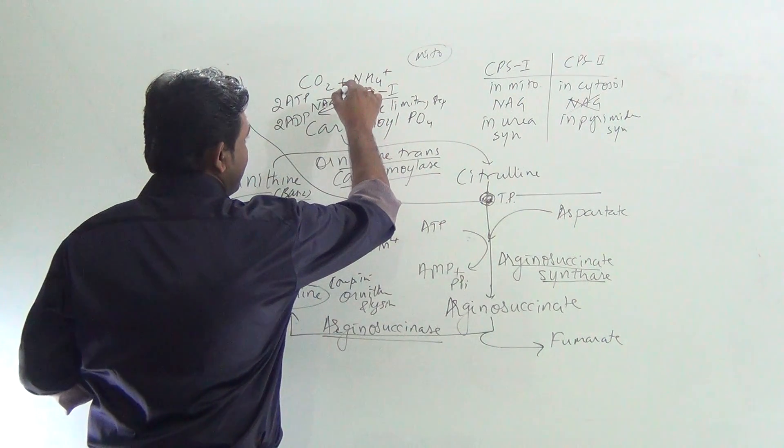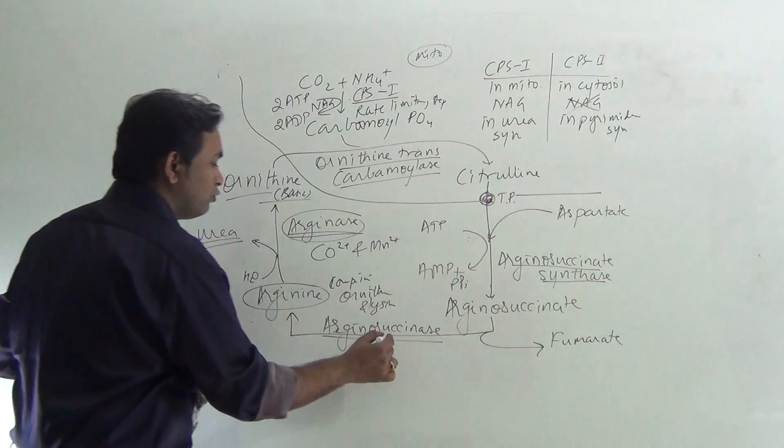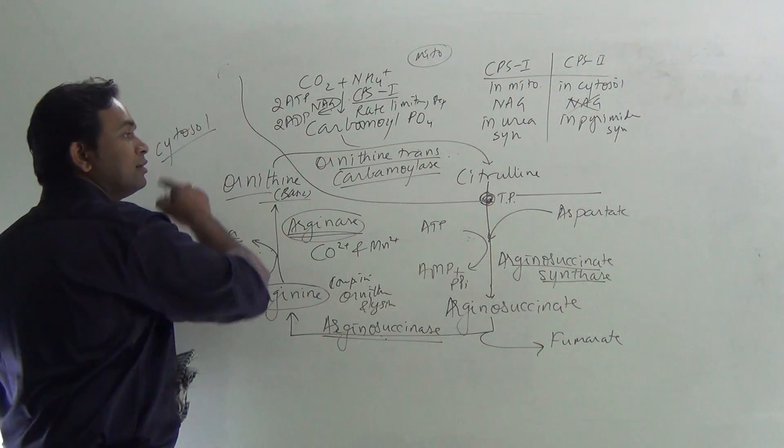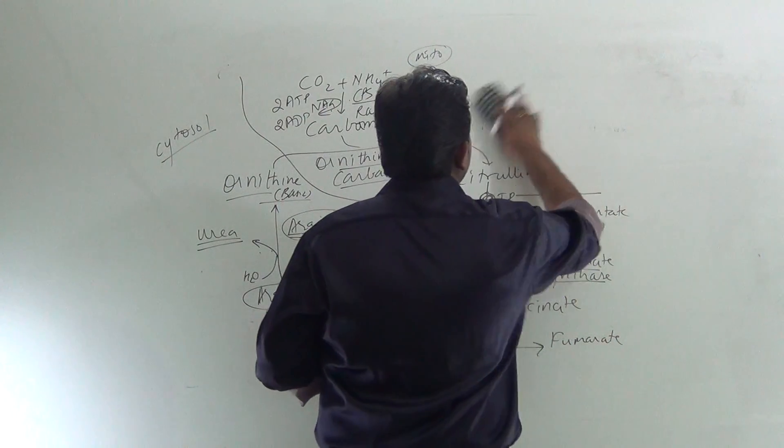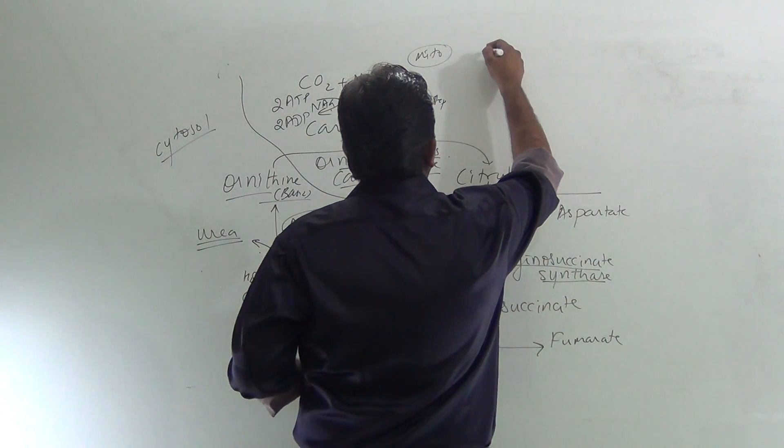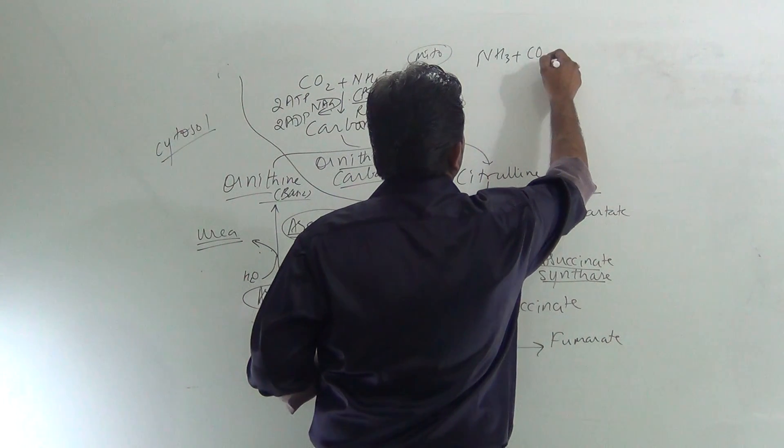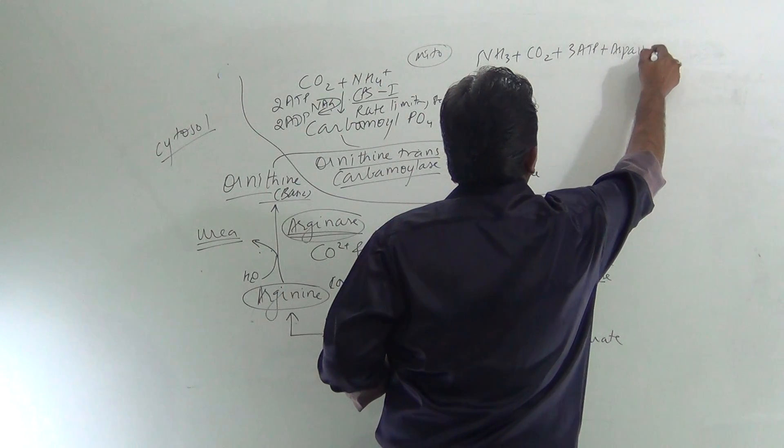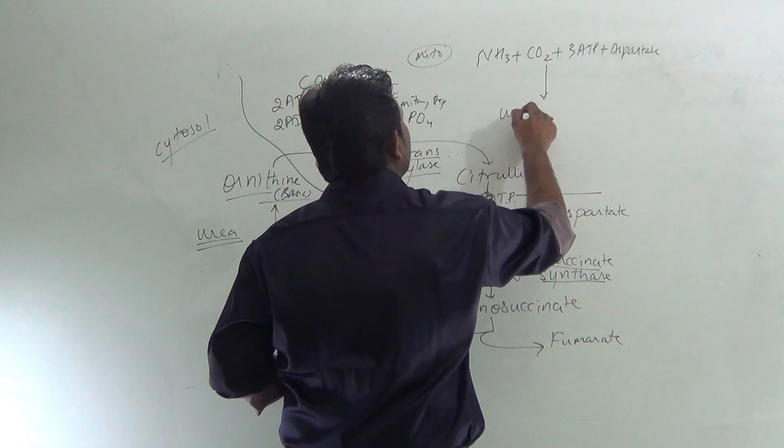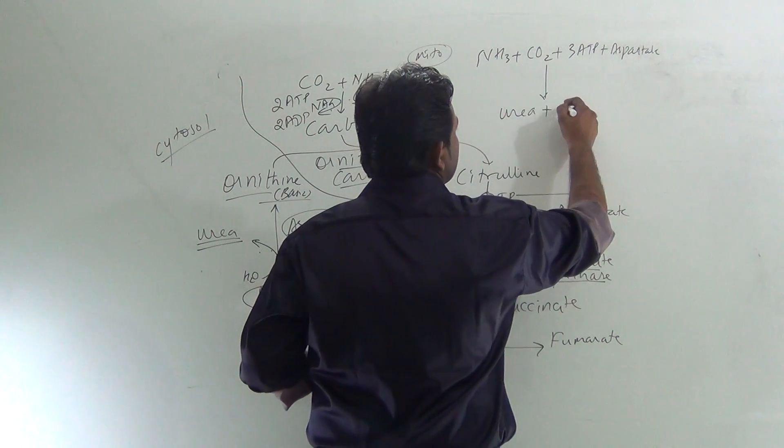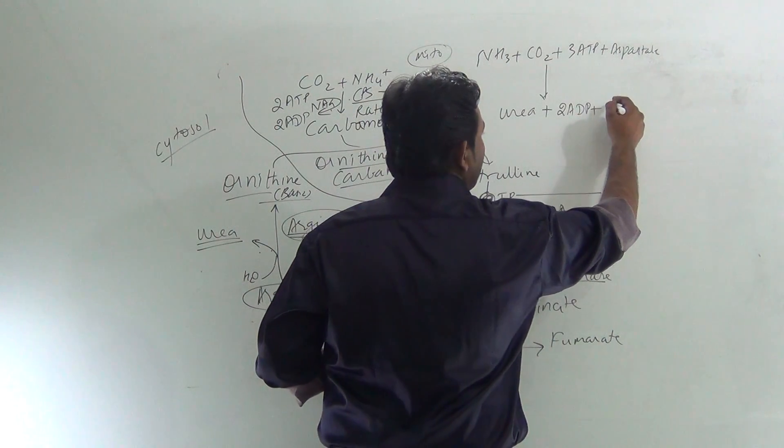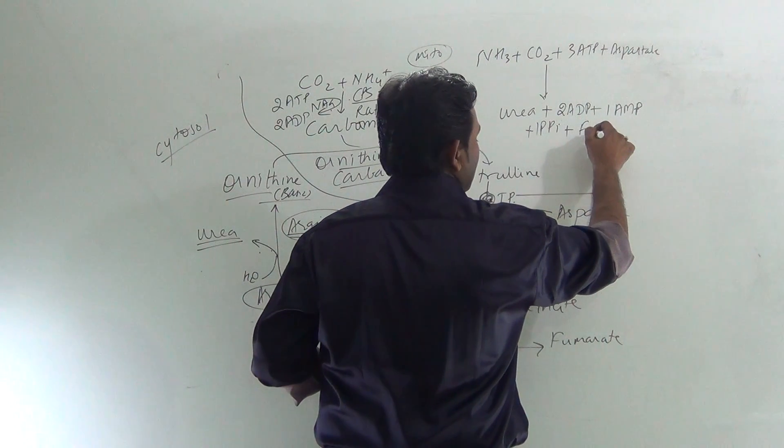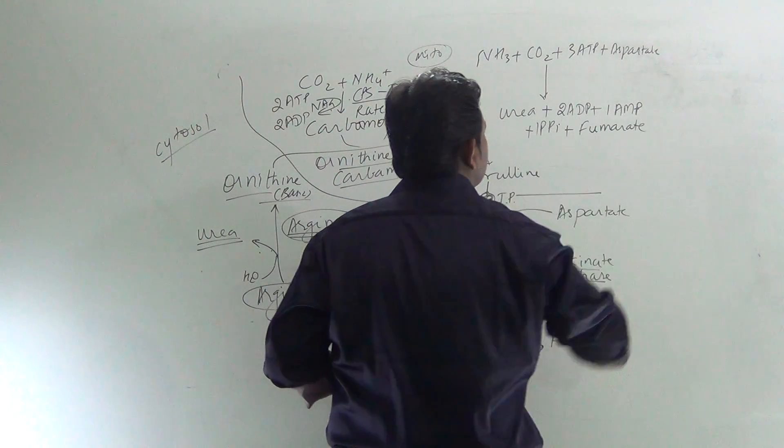So in urea cycle, five steps are there: one, two, three, four, five. Two occur inside the mitochondria, while three occur in cytosol. Overall, we can say that in urea cycle, ammonia molecule, CO2, plus three ATP, plus aspartate are being utilized, which result in formation of urea, that is NH2-CO-NH2, plus two ADP, plus one AMP, plus one PPi, plus fumarate. This is the urea cycle.